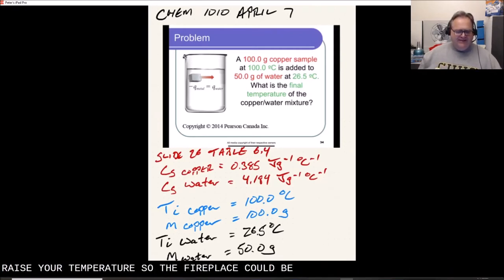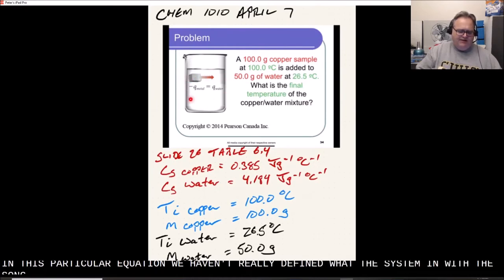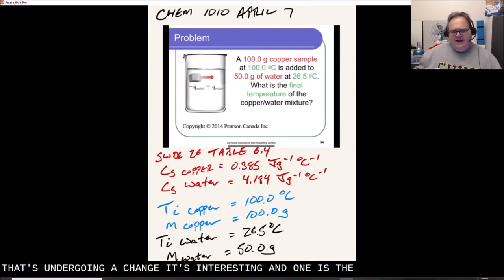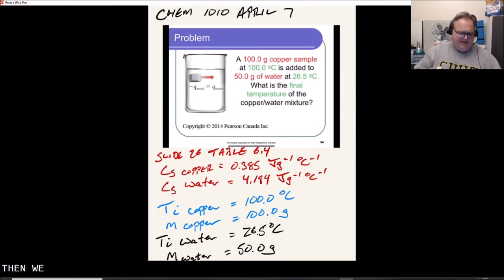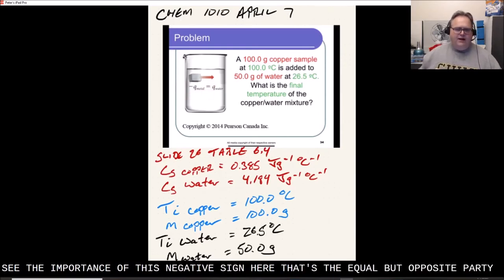Which depends on the amounts of substances and their heat capacities. Now this all ties together through the idea that once we define the system as something interesting, the part of the world that we're really interested in and the surroundings as everything else, whatever happens to the system, the equal but opposite thing has to happen to the surroundings.